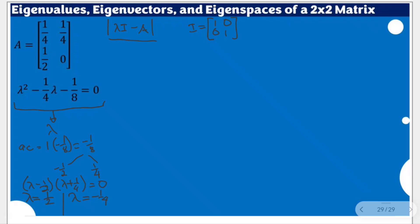By the zero product property, this is only true if lambda equals positive 1/2 and lambda equals negative 1/4th. Substituting 1/2 makes the first factor 0, and substituting negative 1/4th makes the second factor 0. These two values are your eigenvalues of the given matrix, and they are important in solving for the corresponding eigenvectors and eigenspaces.